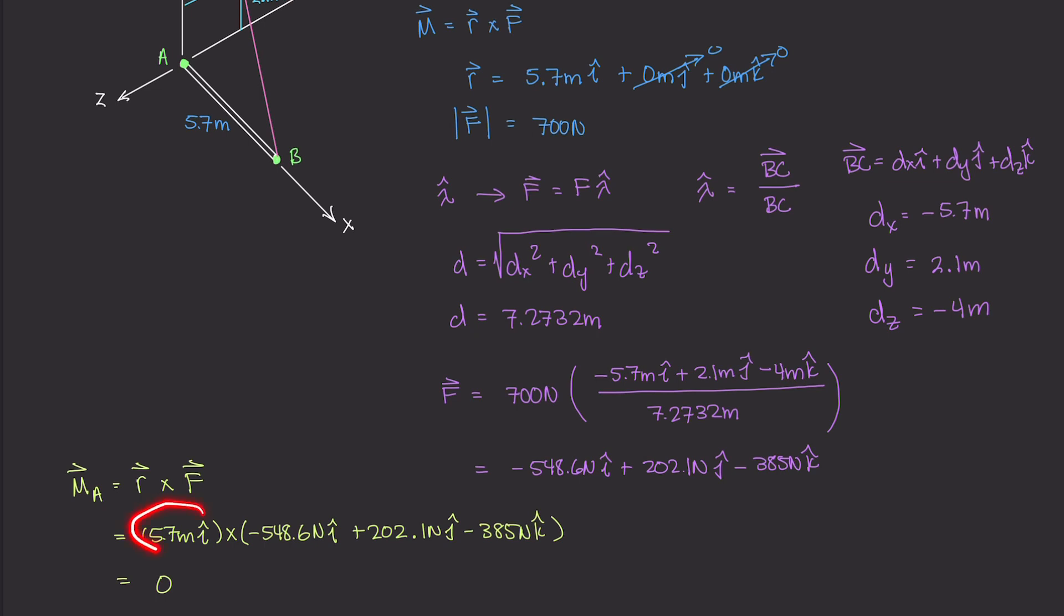How about the next one? So 5.7 meters times this 202.1 newtons. That gives us a value of positive 1152 newton meters. And because we're doing i cross j, that gives us positive k.